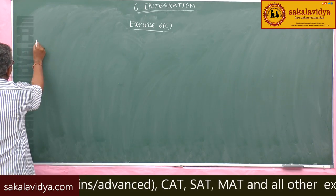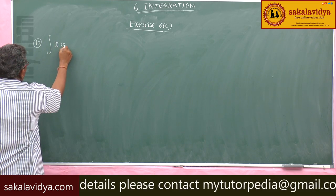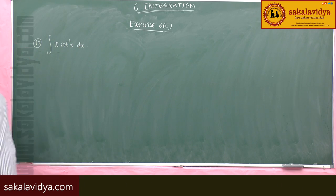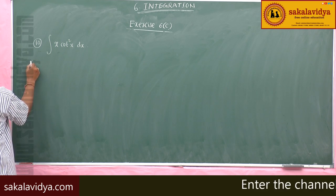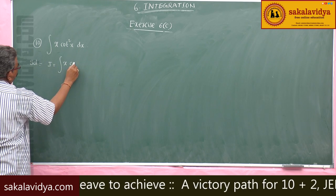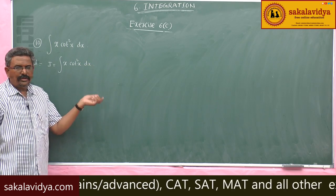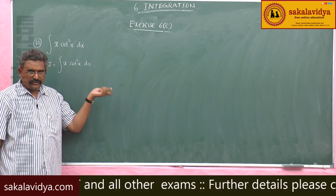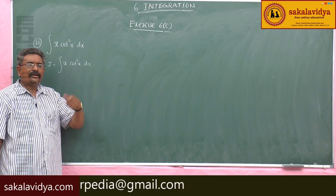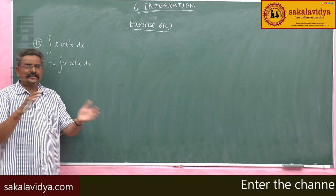Problem 10: integral of x·cot²(x) dx. Let I = integral of x·cot²(x) dx. We cannot directly integrate the product because there is no direct formula for the integral of cot²(x). So cot²(x) must be changed using the identity cot²(x) = cosec²(x) − 1, then we can integrate easily.